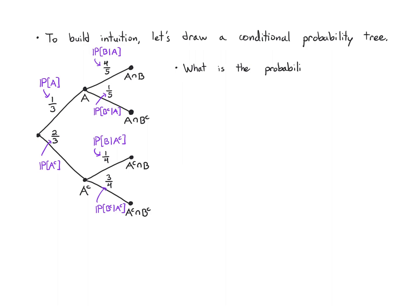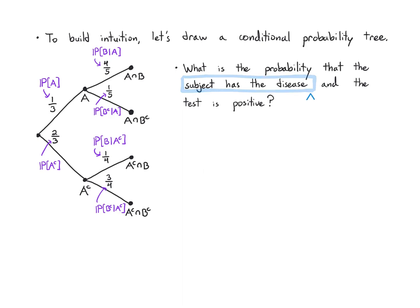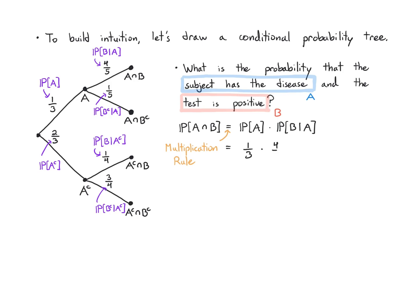What is the probability that the subject has the disease and the test is positive — that is, the probability of A intersect B? I know I can get intersections with the multiplication rule: probability of A times the probability of B given A. That's the multiplication rule from the previous video. So I multiply one-third times four-fifths and I get four out of fifteen. I didn't need the probability tree to do this; I could have looked up the values on the previous slide.